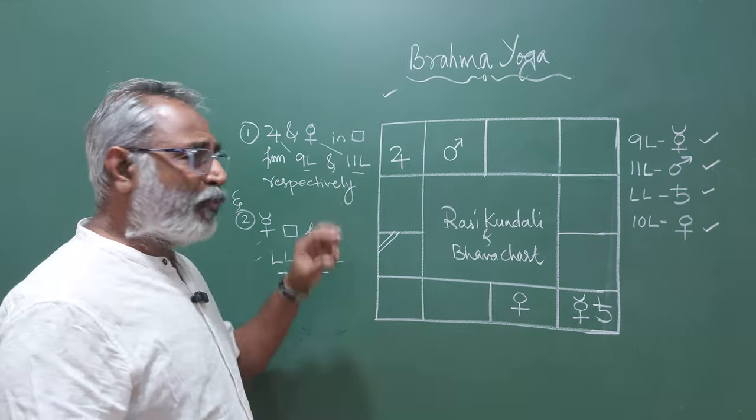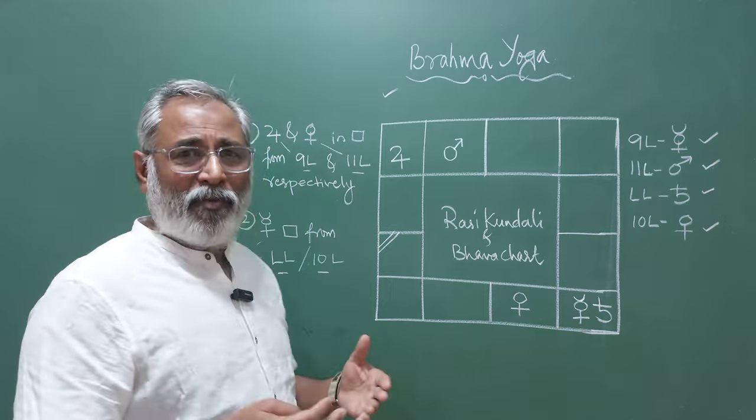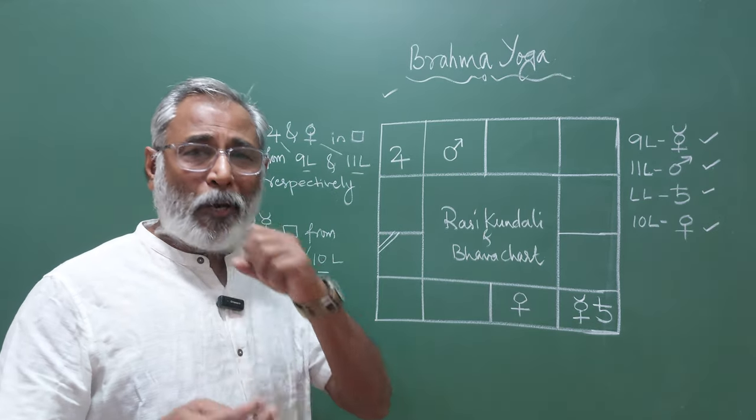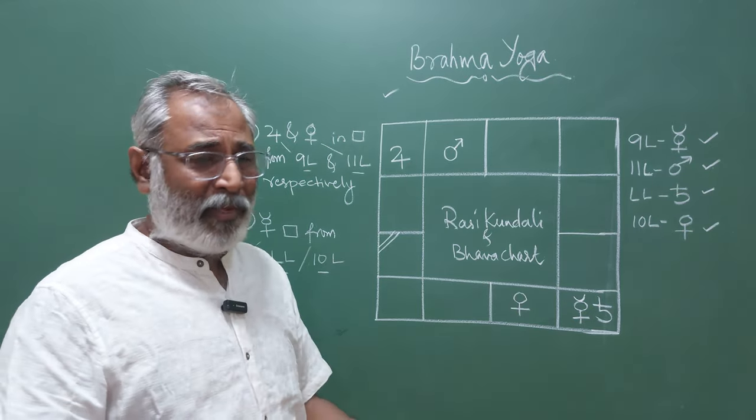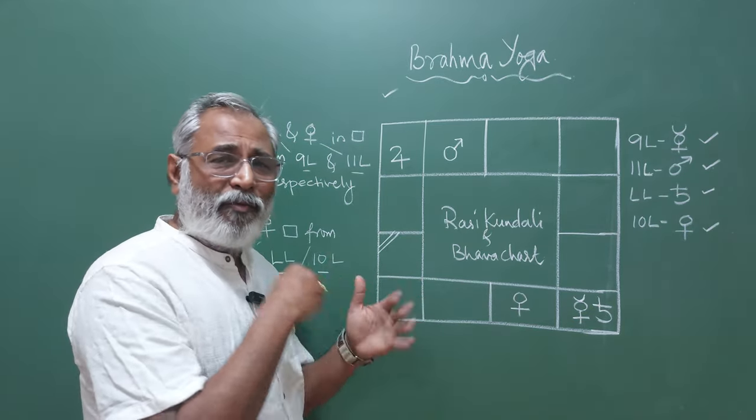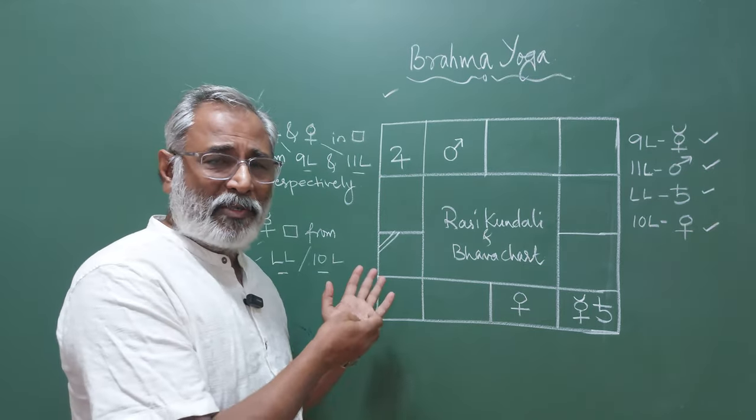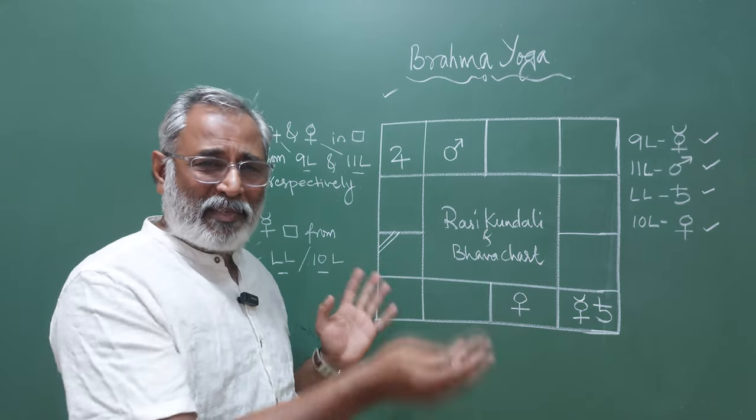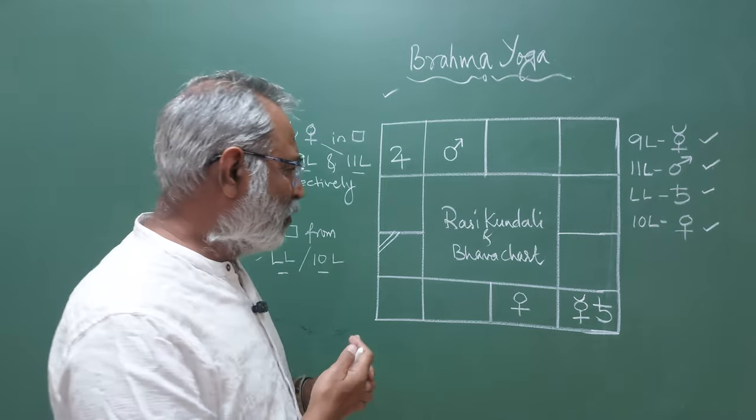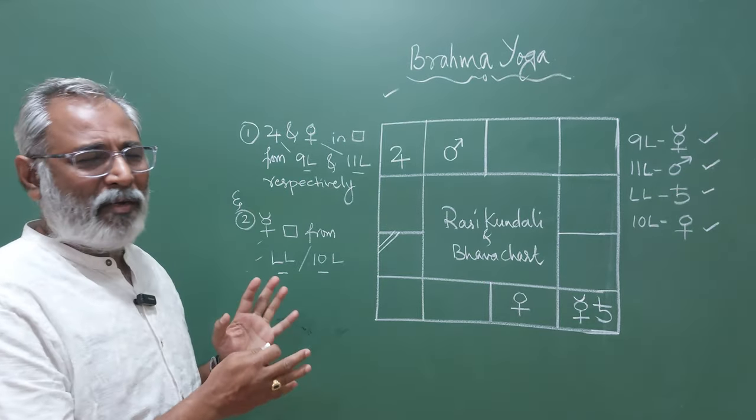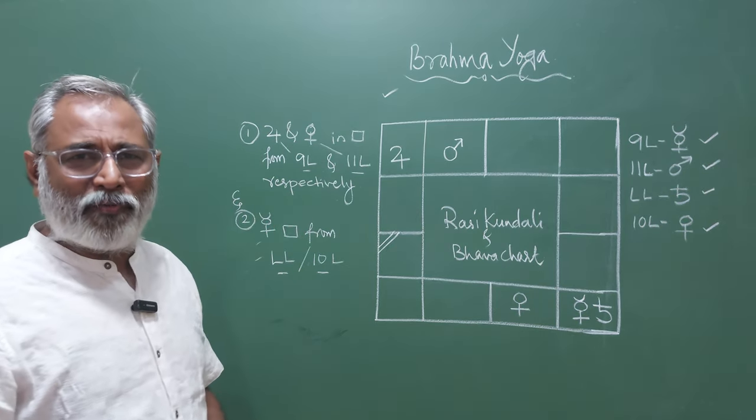Second thing, the lord of profit, that is the eleventh lord, is aspecting Venus. Venus is the lord or karaka or signifier for luxury. So when the lord of profit is aspecting the lord of luxury, obviously the person will have a lot of facilities, he will be in very good class. So this is a very very strong Raja Yoga which is known as Brahma Yoga. So thank you very much for today's class.